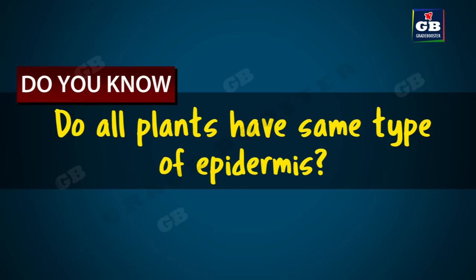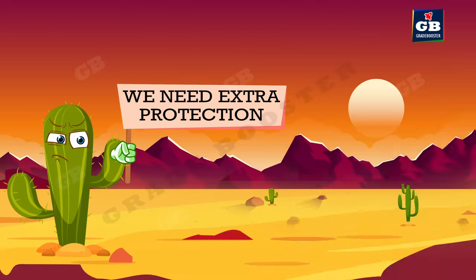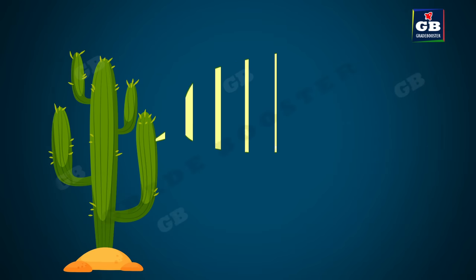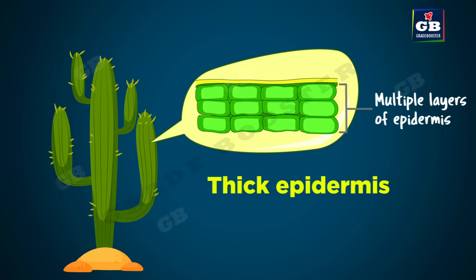Do all plants have the same type of epidermis? No. The plants that need extra protection have a different epidermis. The epidermis of plants living in extreme dry habitats, like cactus, has a thicker epidermis with multiple layers. This thicker epidermis prevents the loss of water.